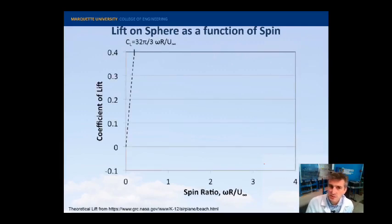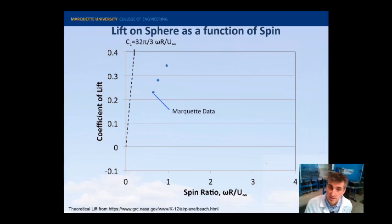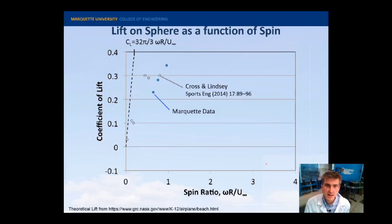Here is the theoretical lift curve. Spin rate versus coefficient of lift. And then, here's the data that we collected. You can see we're quite far from the theoretical prediction. This is some data from Lindsay and Cross that I thought I'd put on here just to compare our data with. What's nice about their data is they're able to get down into this low spin rate regime. You can see it looks like, as the spin rate goes to zero, the lift is going to zero, which makes a lot of sense.